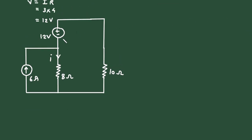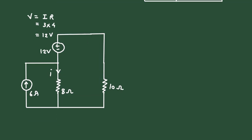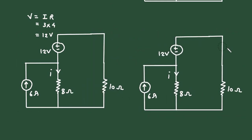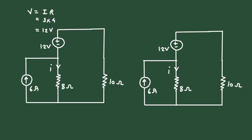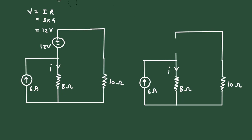Now again we can convert this voltage source into its equivalent current source. When we convert this voltage source to a current source, it will be in parallel with this 10 ohm. The direction will be downward, because if we redraw this voltage source it is positive here and negative here, at 12 volt — so the current source direction will be downward.